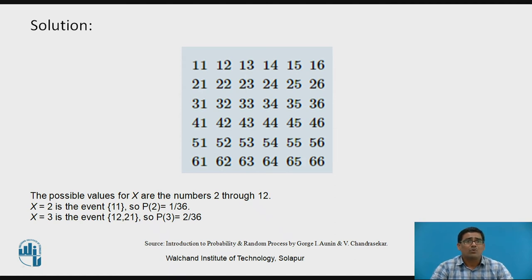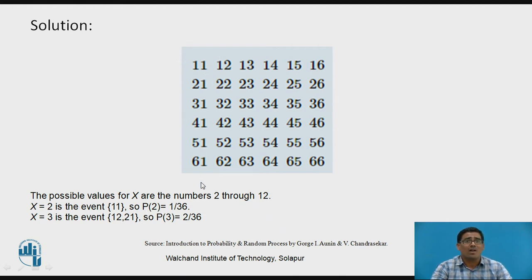X equal to two corresponds to the event (1,1), so P(2) = 1/36, since the total number of possible outcomes is 36. We apply the basic definition of probability: probability equals number of favorable events divided by total number of samples. For X equal to three, we get the pairs (1,2) and (2,1), so the number of events is two, giving P(3) = 2/36.